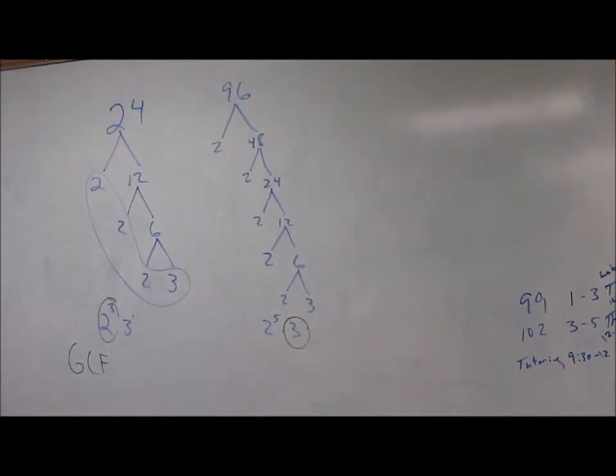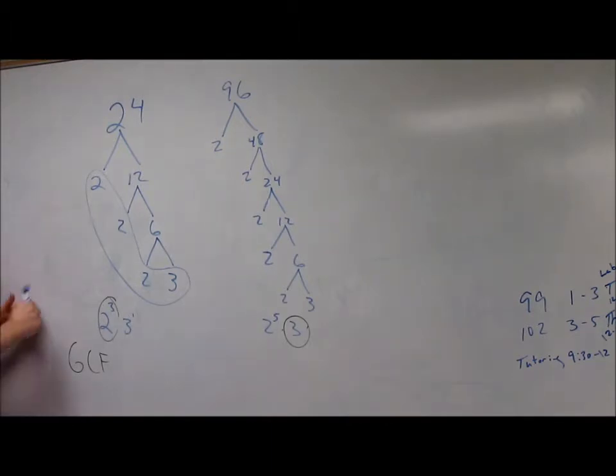All right, let's start that again. Okay, so tree method versus the upside-down division method. Tree method means break it down, split it up into its branches. Divide by 2, you still use prime factorization.